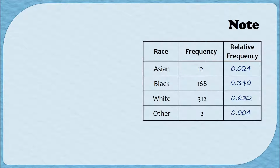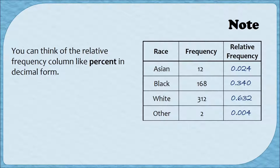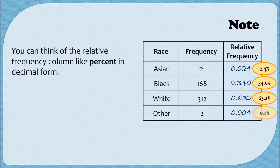Before we move on, here are a few notes about relative frequency distributions. First, you can think of the relative frequency column like percent, just in decimal form. To form a percentage, you take the ratio of the frequency to the total population and multiply by 100. For example, 0.024 is like 2.4%; 0.340 is 34% of the inmates were Black; 63.2% were White; and 0.4% — less than half a percent — had some other race.